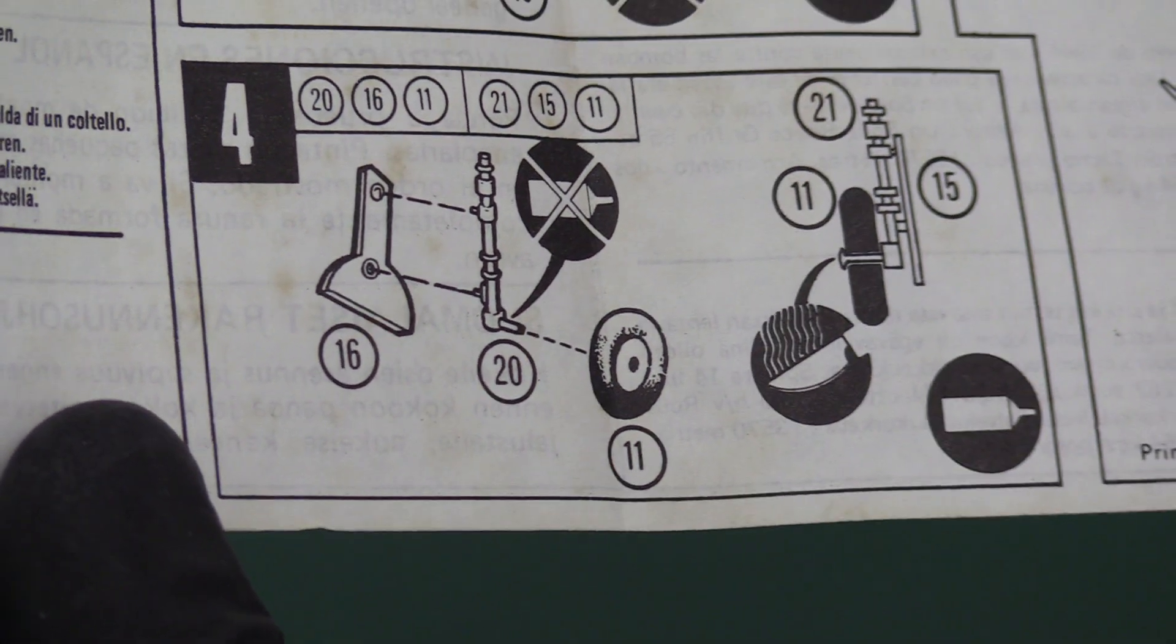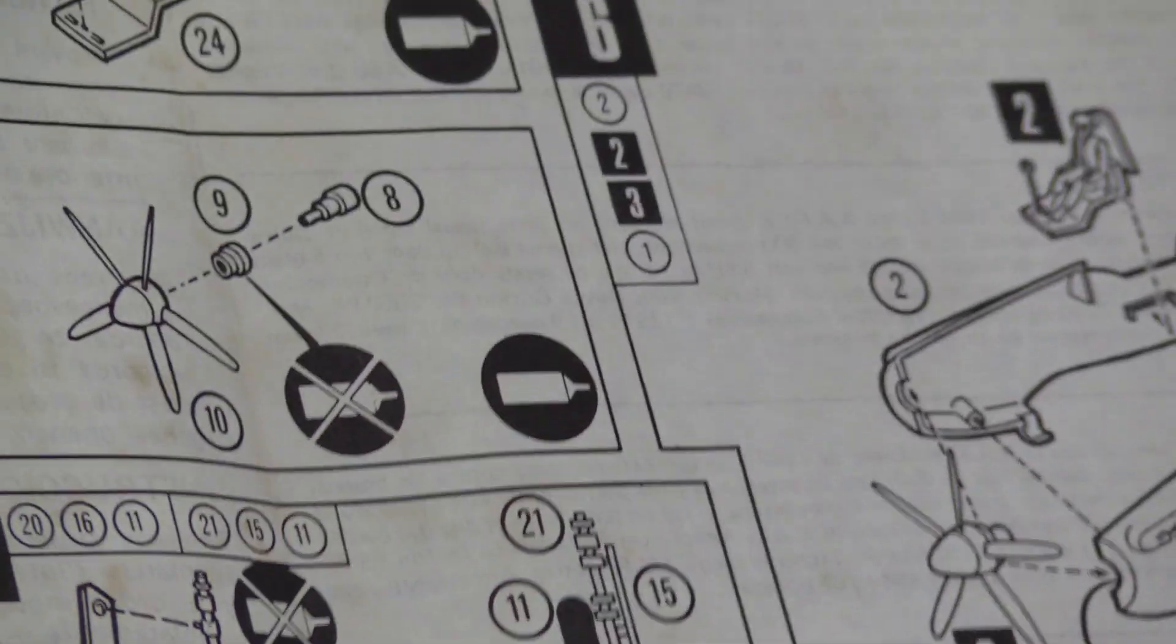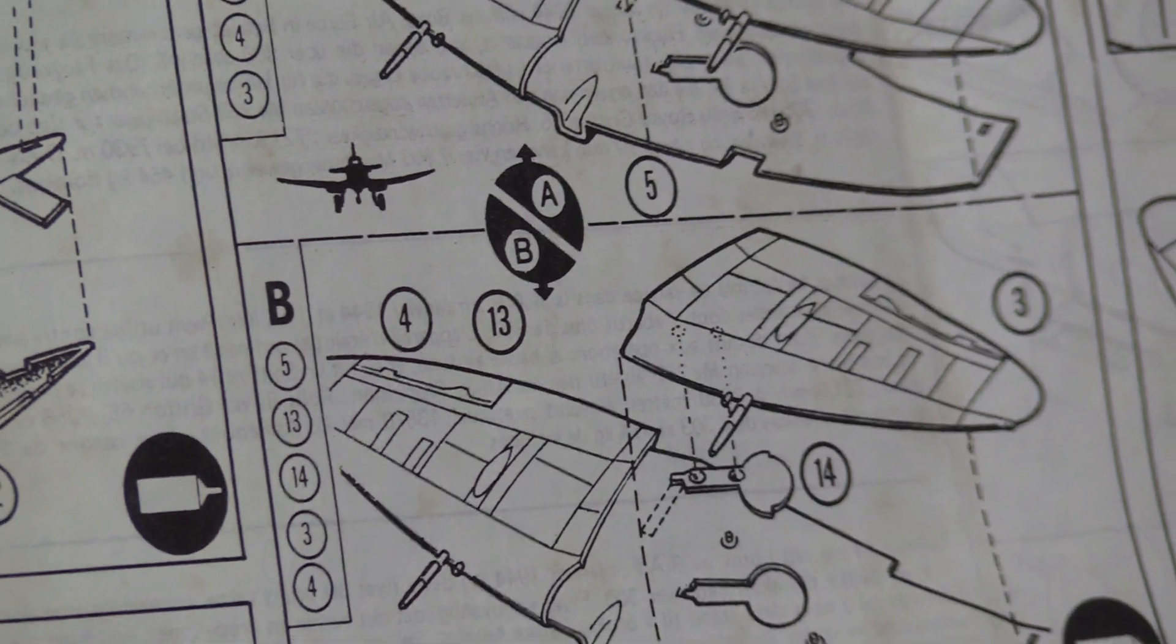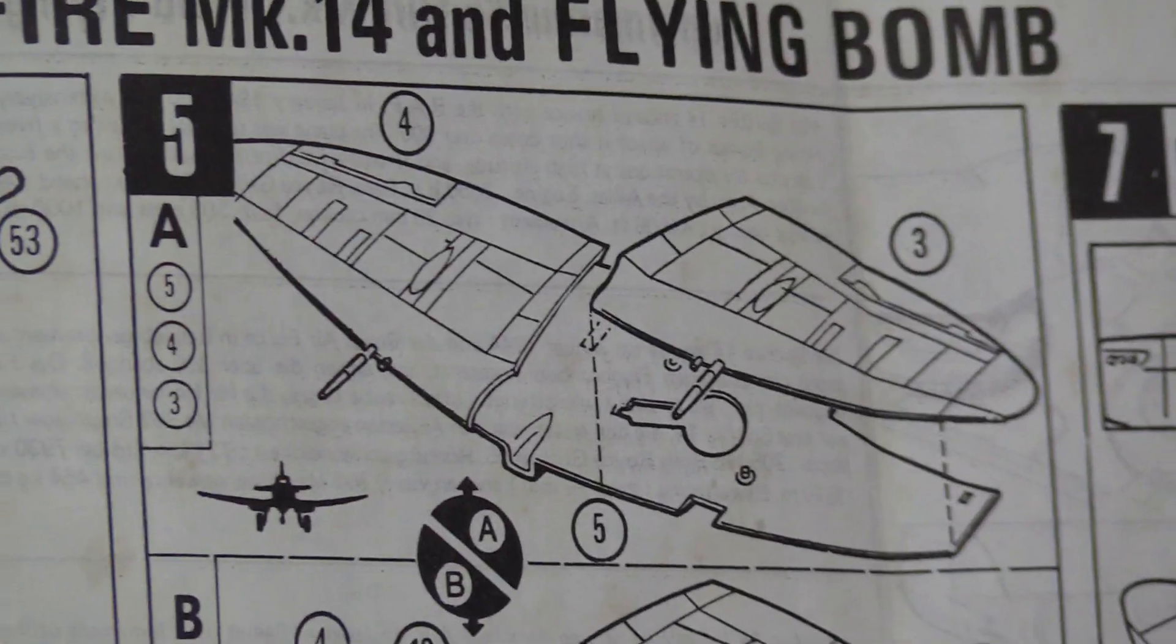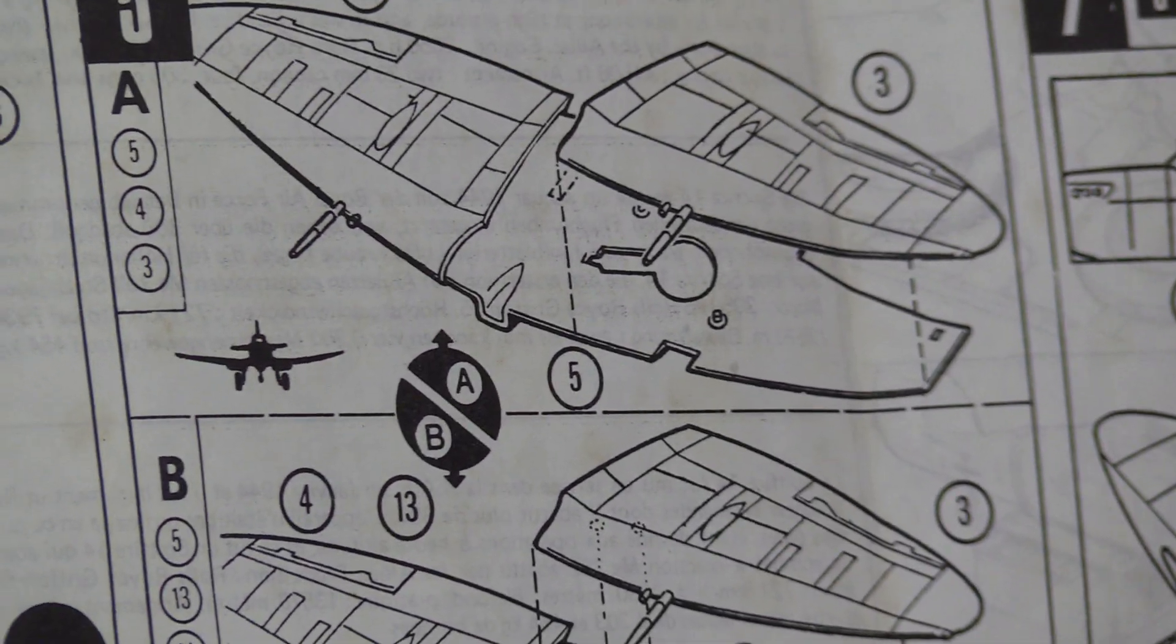And you've got your 5-bladed prop. Then we have our undercarriage legs, tyres and wheels. The cannons are already - I don't like that - the cannons are actually moulded into the wing. I'm not sure that's a good idea, they could get broken easily.